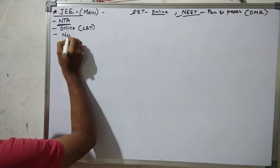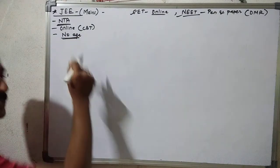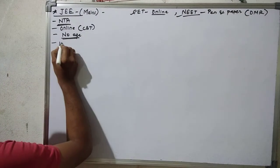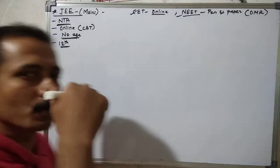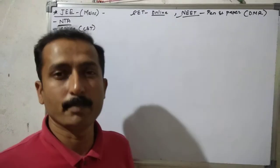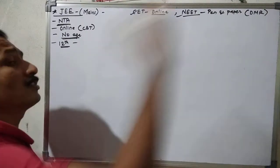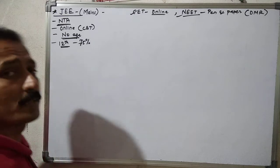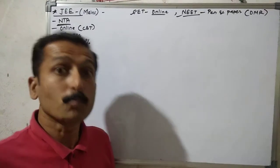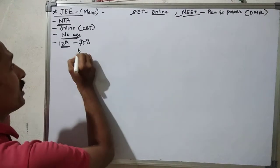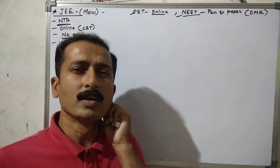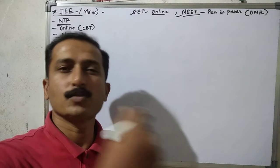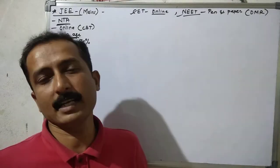There is no upper age limit for this exam. The minimum qualification is 12th standard — you must have appeared or qualified in 12th standard. For IIT-level institutes, the important criteria is that you need 50 percent marks in PCM — Physics, Chemistry, and Math — in your board exam. This is for general category students.